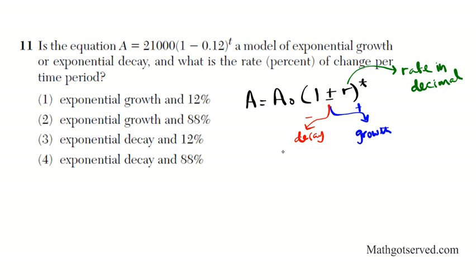If you want to convert it to percent, you just move the decimal back twice and you get it in percent. T is basically the time, and A sub 0 is the initial amount. So let's solve the problem. In this problem we have A equals 21,000 times (1 minus 0.12) to the T. You notice that the sign is negative. It is negative, that means it's decay.